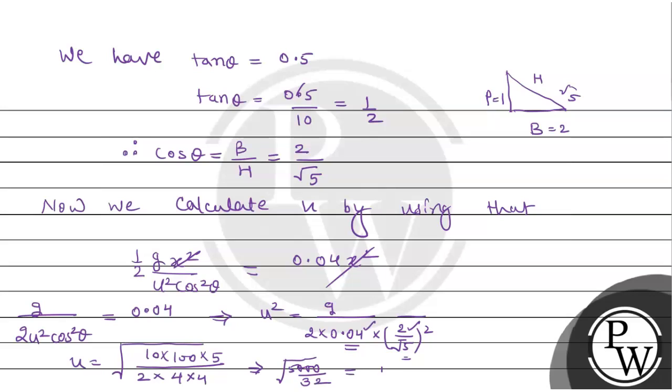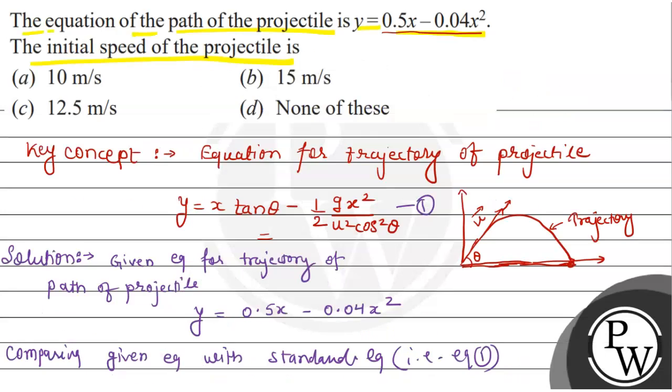Now 12.48 means 12.5 meter per second. So let's see which is the correct option. 12.5 meter per second, option C is the right option. I hope you understood it well. Best of luck, thank you.